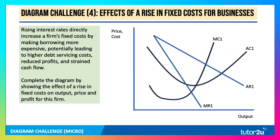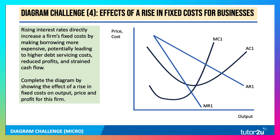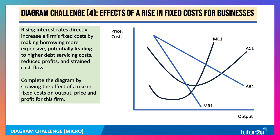Here's number four: the effect of a rise in fixed costs for businesses. Rising interest rates directly increase a firm's fixed costs by making borrowing more expensive, potentially leading to higher debt servicing costs, lower profits, and strained cash flow. Complete the diagram by showing the effect of a rise in fixed costs on output, price, and profit for the firm. The diagram has been partially completed — assuming the firm is a profit maximiser, press pause and have a go.